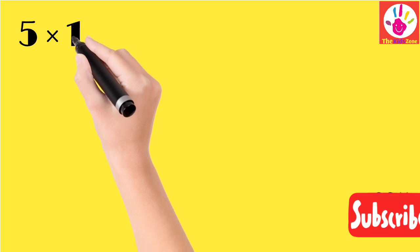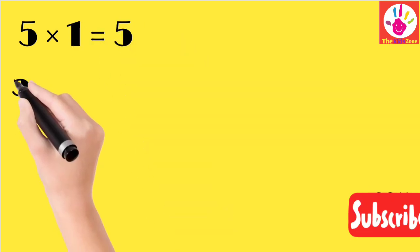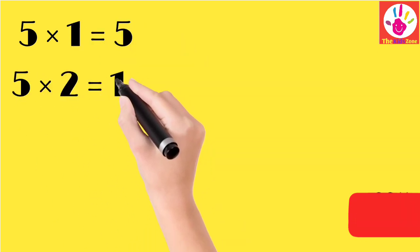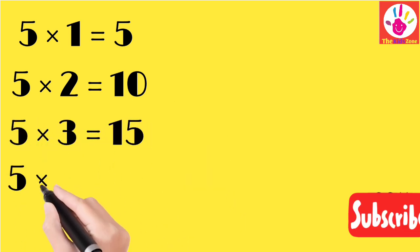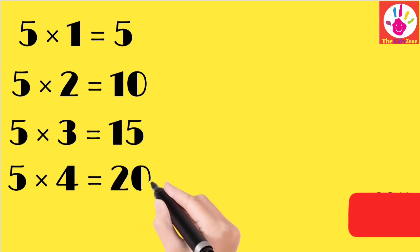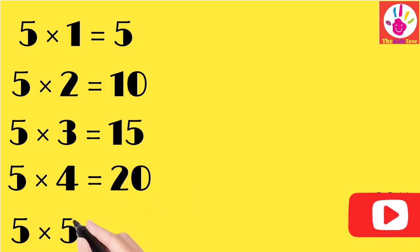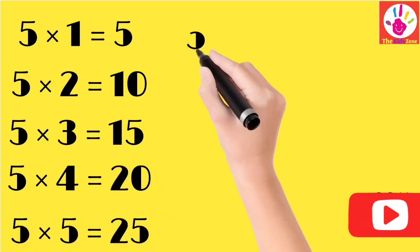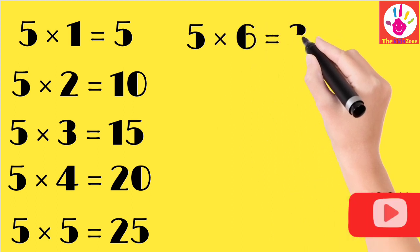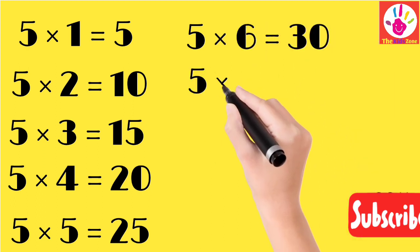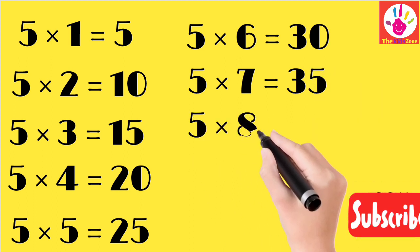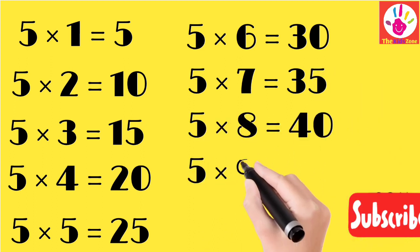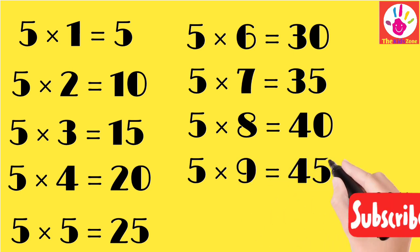Table 5: 5 ones are 5, 5 twos are 10, 5 threes are 15, 5 fours are 20, 5 fives are 25, 5 sixes are 30, 5 sevens are 35, 5 eights are 40, 5 nines are 45, 5 tens are 50.